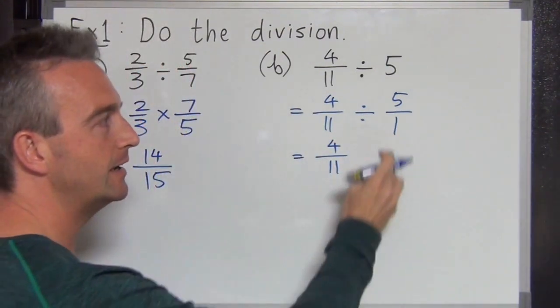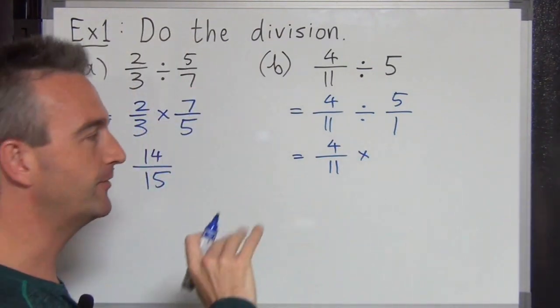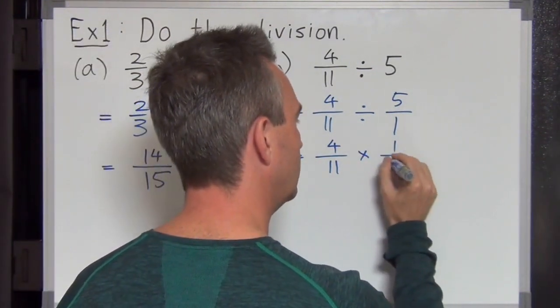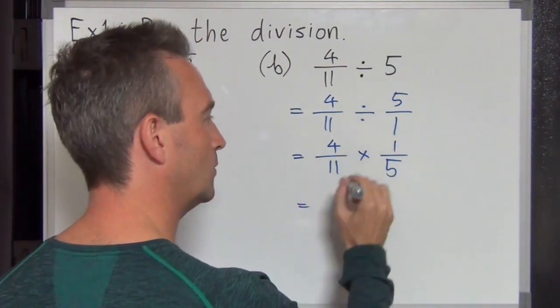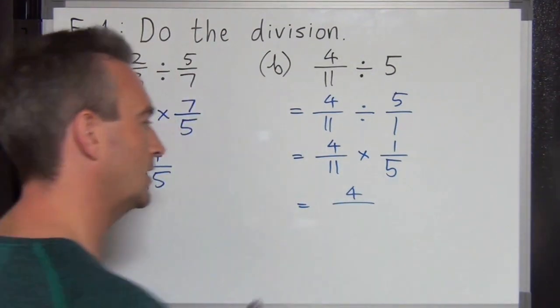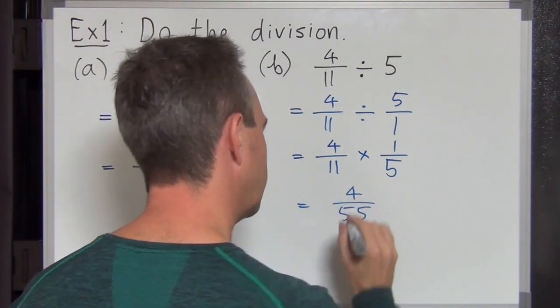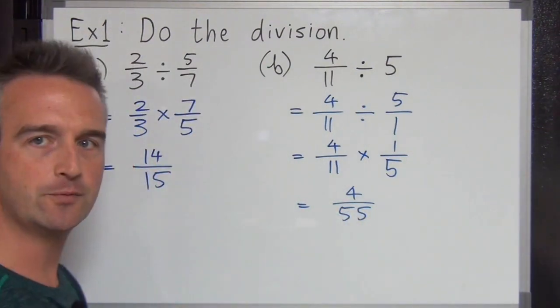4 over 11. The division becomes a multiplication and now let's invert the 5 over 1 to become 1 over 5. Now let's do the multiplication. 4 times 1 is 4 on the top and on the bottom 11 times 5 is 55. Can that simplify? No I don't think so. Final answer 4 over 55.